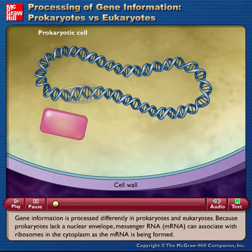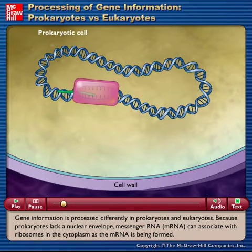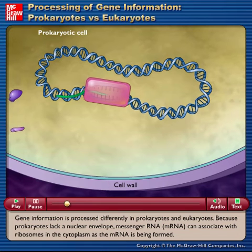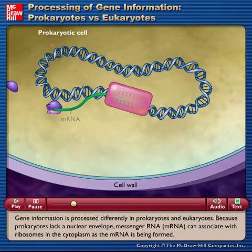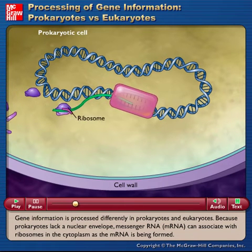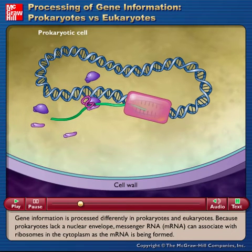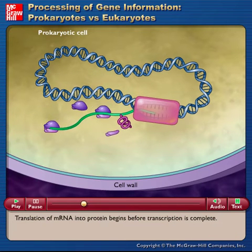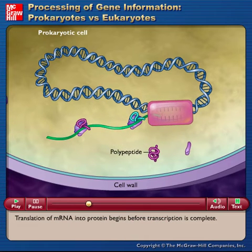Gene information is processed differently in prokaryotes and eukaryotes. Because prokaryotes lack a nuclear envelope, messenger RNA can associate with ribosomes in the cytoplasm as the mRNA is being formed. Translation of mRNA into protein begins before transcription is complete.